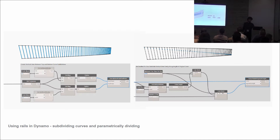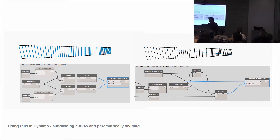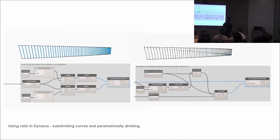We create some geometry relatively easily. We take the points on the top row, the points on the bottom, and we transpose the list — as David said earlier. We're then able to take point at top, point at bottom, and join them as a vertical line. That's the initial geometry. We can then play with our slider, increase the amount, and it's nice and malleable.